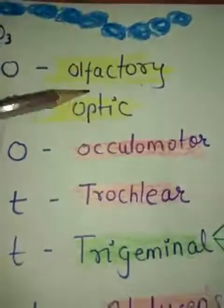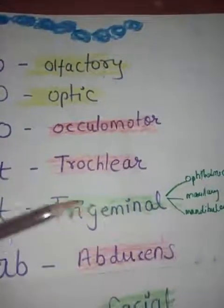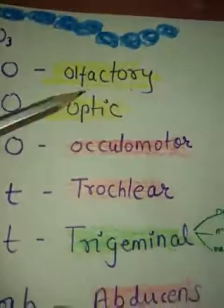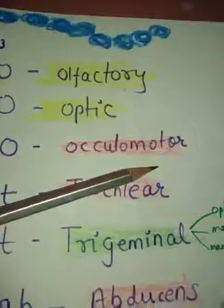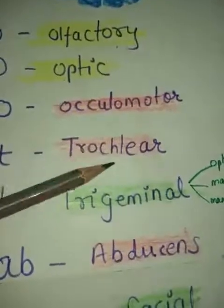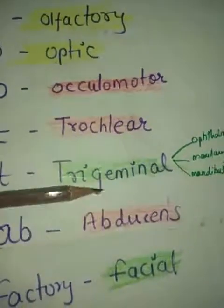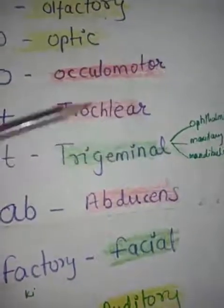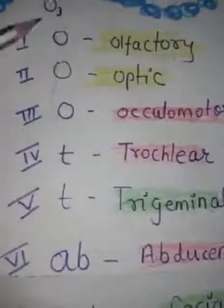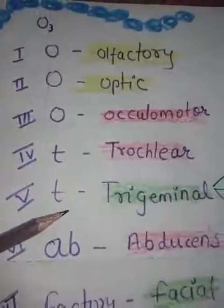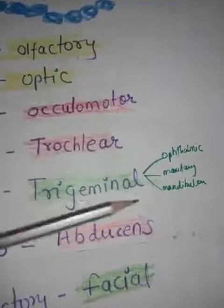I have colored yellow for sensory, red for motor, and green for both. The third O stands for oculomotor — the oculomotor nerve supplies some muscles of the eyeball: superior rectus, inferior rectus, medial rectus, and inferior oblique muscles. Then the fourth cranial nerve is the trochlear nerve.